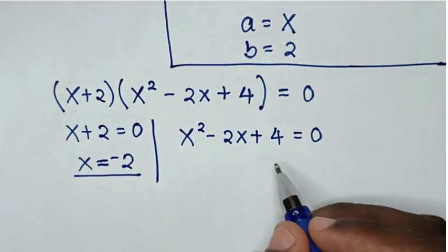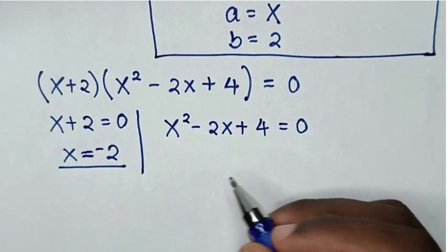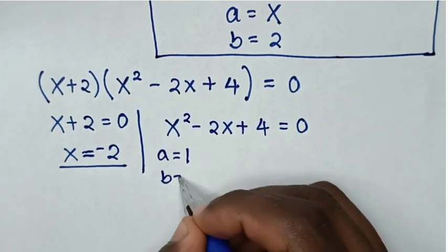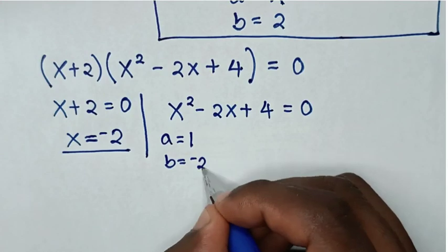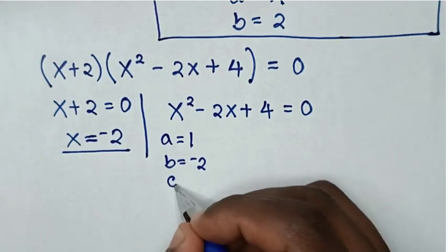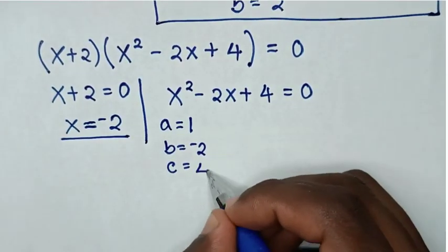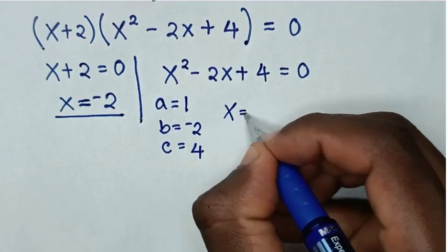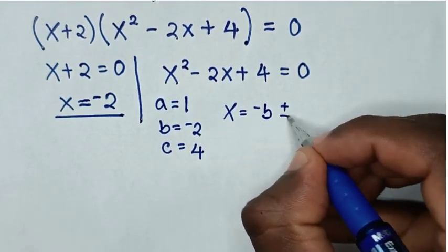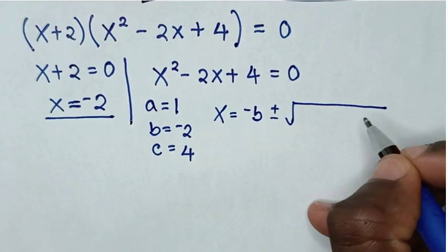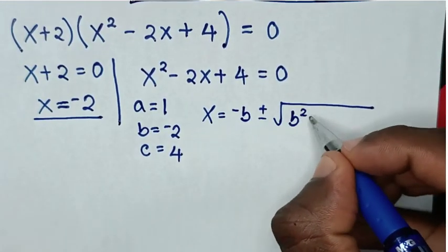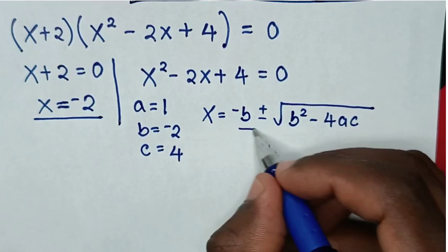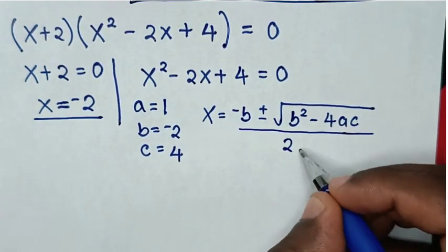From the second solution, which is a quadratic equation, a = 1, b = -2, and c = 4. By applying the quadratic formula, which is x = (-b ± √(b² - 4ac)) / 2a.